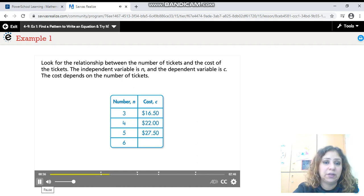The independent variable is N and the dependent variable is C. The cost depends on the number of tickets. We need to look for the relationship between the tickets and the cost.